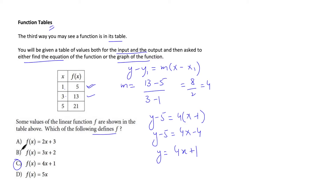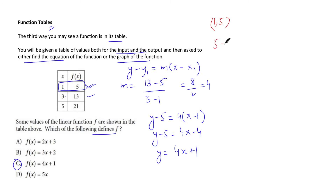Another strategy is to plug answer choices into the table values to make life simpler. For example, substitute x = 1, y = 5 into option C: 5 = 4(1) + 1, so 5 = 5. That confirms C is correct. However, plugging in all options can sometimes cost more time, so choose your approach wisely.